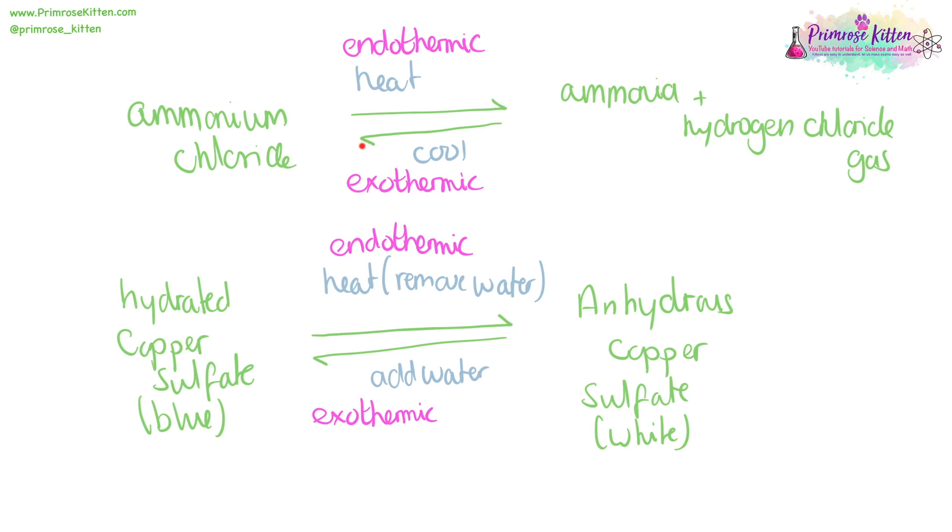This half arrow on top of the other half arrow, going the opposite direction, is a symbol for a reversible reaction. Ammonium chloride will decompose into ammonia and hydrogen chloride gas upon heating, and this is an endothermic reaction because you need to put heat into it. Cooling it is an exothermic reaction because energy will come out. Hydrated copper sulfate, which is the lovely blue color, upon heating will lose the water, turn into anhydrous copper sulfate, which is a white color. Adding water in will turn it back to hydrated copper sulfate.